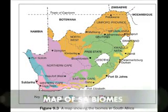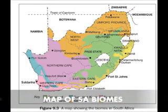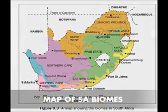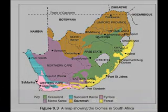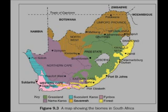A major ecological area defined by its climate is called a biome. We will be focusing on the succulent Karoo, Fynbos, and forest biomes found in the Western Cape, which have been highlighted in the image shown.